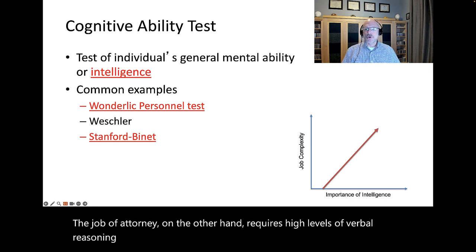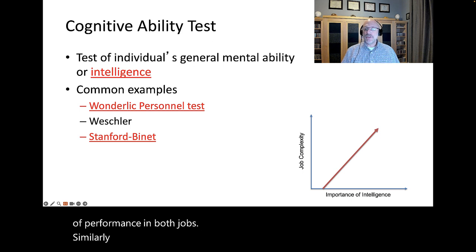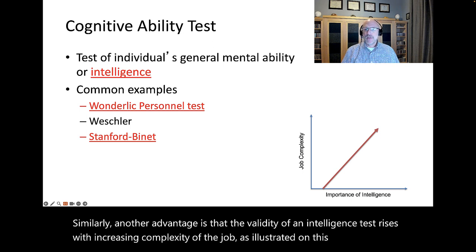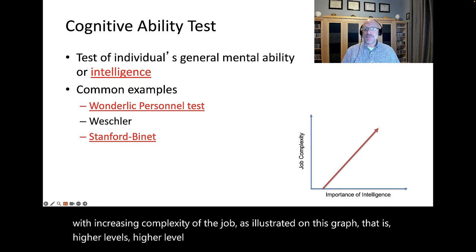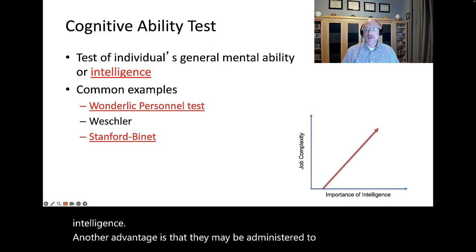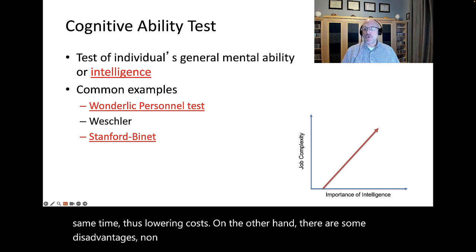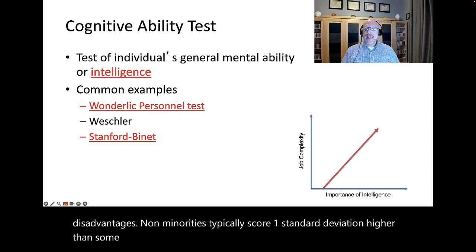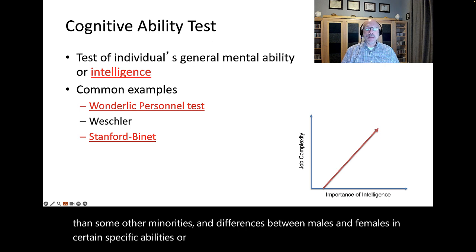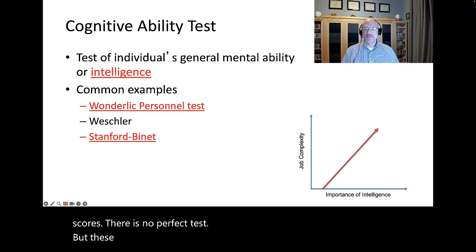Intelligence as a higher order construct is therefore predictive of performance in both jobs. Similarly, another advantage is that the validity of an intelligence test rises with increasing complexity of the job, as illustrated on this graph. That is, higher-level jobs have an even stronger correlation with intelligence. Another advantage is that they may be administered to large groups at the same time, thus lowering costs. On the other hand, there are some disadvantages. Non-minorities typically score one standard deviation higher than some other minorities. There is no perfect test, but these tests come really close.